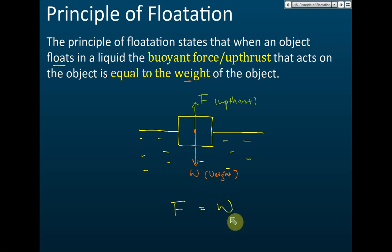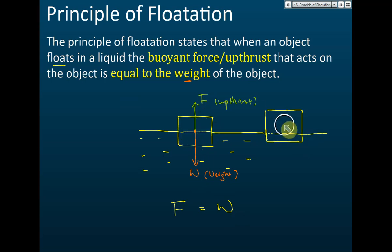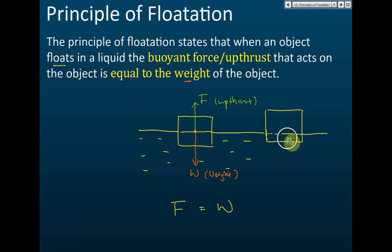Looking at two cases: this object displaces less water compared to this other one. If less water is displaced, the upthrust will be smaller. Always remember — the upthrust is equal to the weight of the displaced water. If you displace more water, you have a higher upthrust.